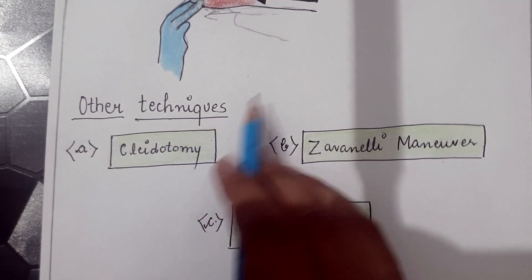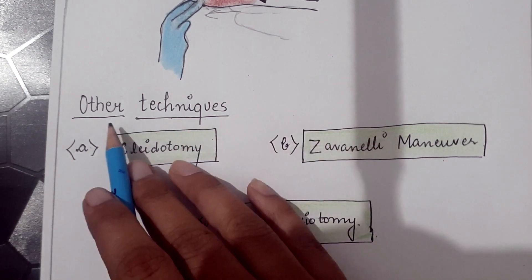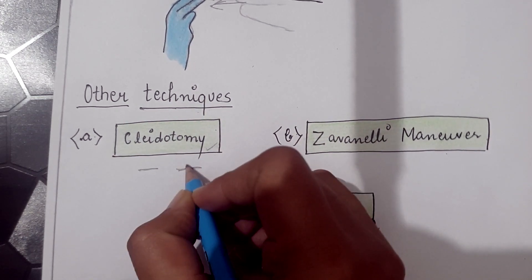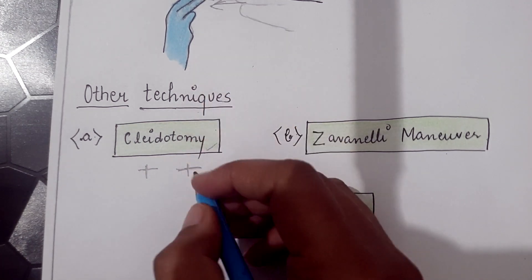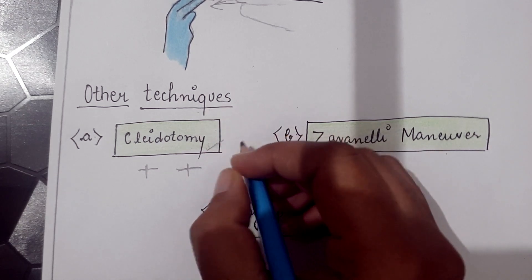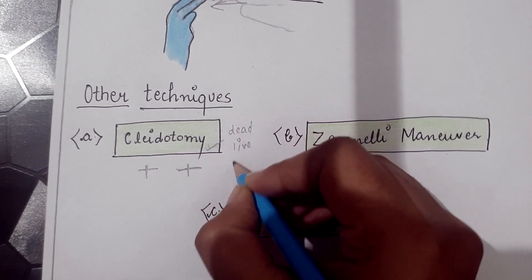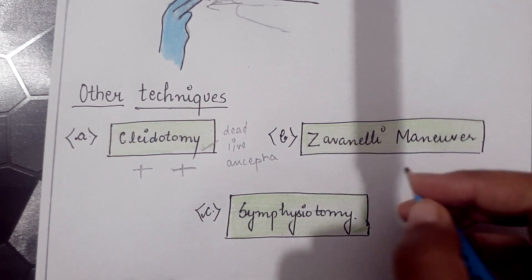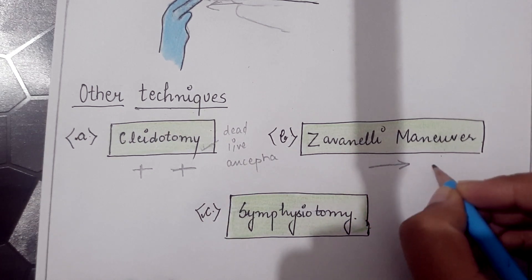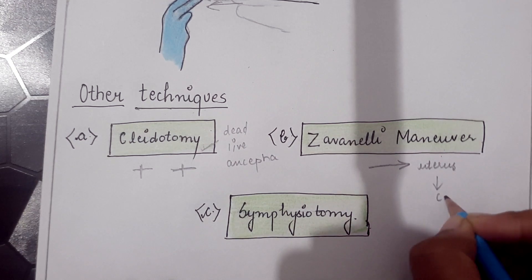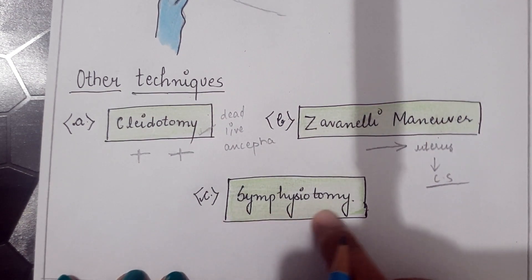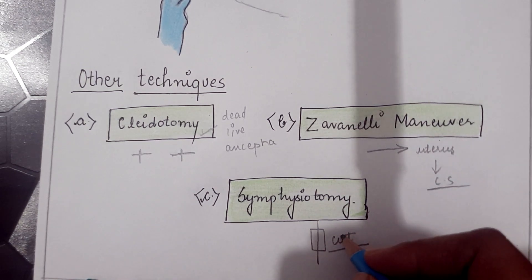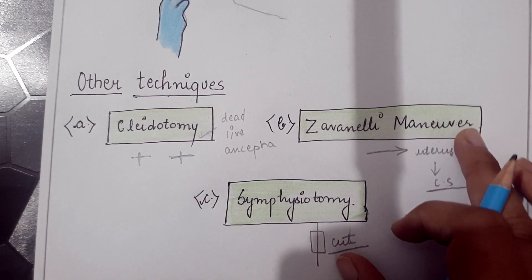If all these maneuvers fail, other techniques are used. Cleidotomy: one or both clavicle bones are cut with scissors to reduce the shoulder girth; this is mainly done for a dead fetus or a live fetus with anencephaly. Zavanelli maneuver: the baby's head is pushed back into the uterus and then a caesarean section is performed. Symphysiotomy: the symphysis pubis is cut to deliver the shoulders; this procedure is very rarely done.